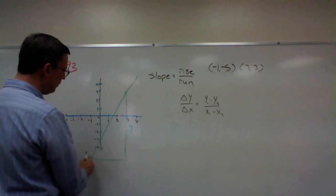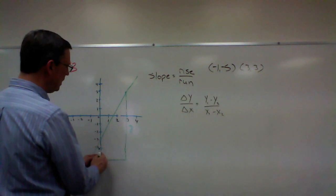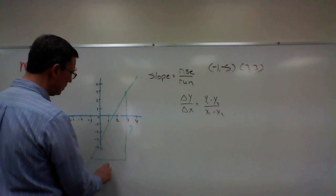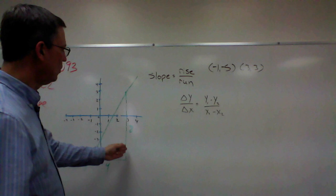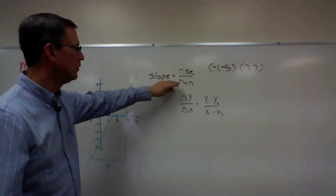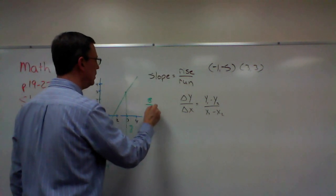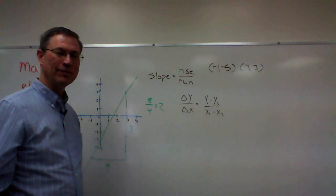And then going here, negative one to here is one. And then from here to here is three, so four. So I could visually see that this is a slope of eight rise over four run, which would be two.